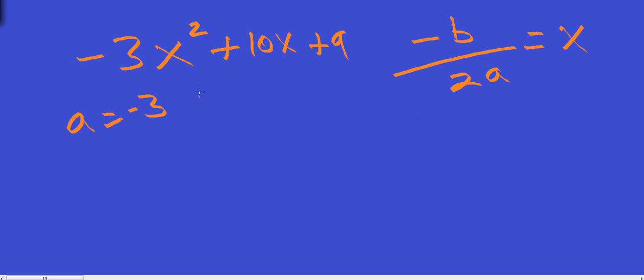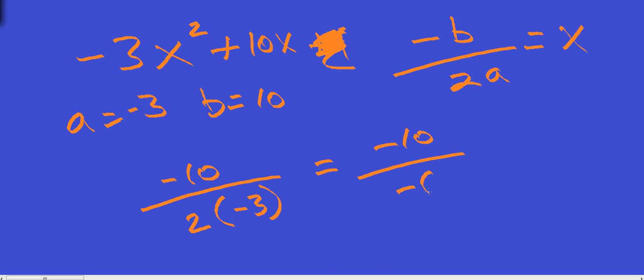a is negative 3, b is 10. I'm not even going to worry about my c because it's nowhere in here. So you've got negative 10 over 2 times negative 3, which would be negative 10 over negative 6, which reduces down to positive 5 thirds.